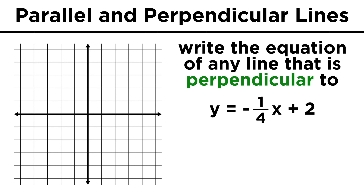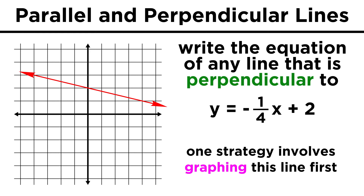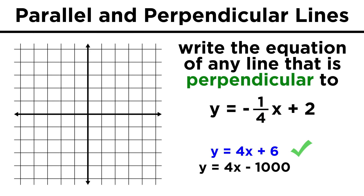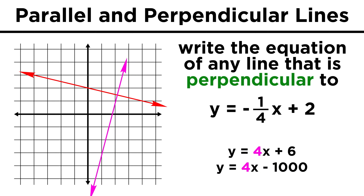There are many questions you may encounter in algebra that require you to understand these concepts. For example, a question may ask you to write the equation of any line that is perpendicular to y equals negative one-fourth x plus two. Rather than graphing this line and choosing an arbitrary perpendicular line, we just recognize that the opposite reciprocal of this slope would be positive four, so any line with a slope of four will satisfy the requirements. Y equals four x plus six, or four x minus a thousand — it doesn't matter. If it has a slope of four, it will intersect this line at a right angle somewhere.